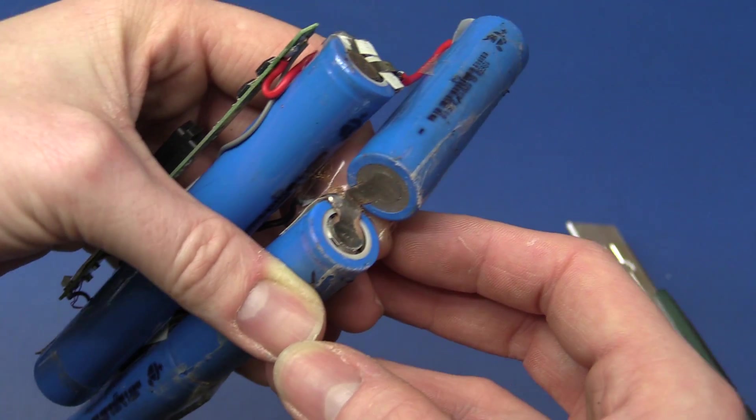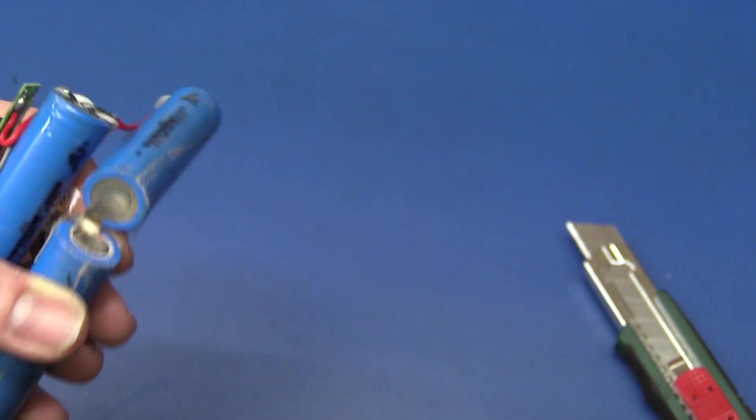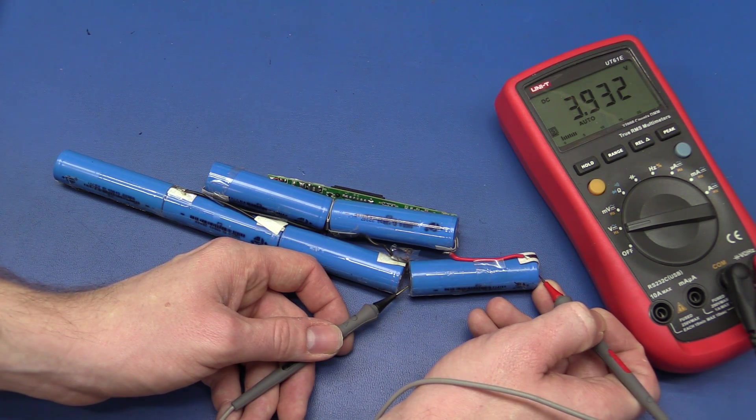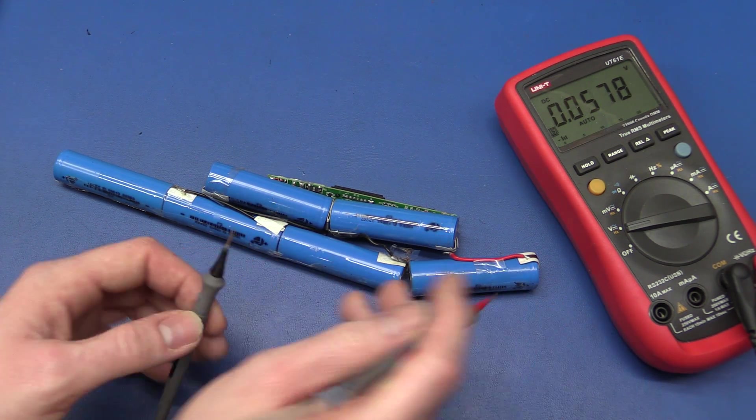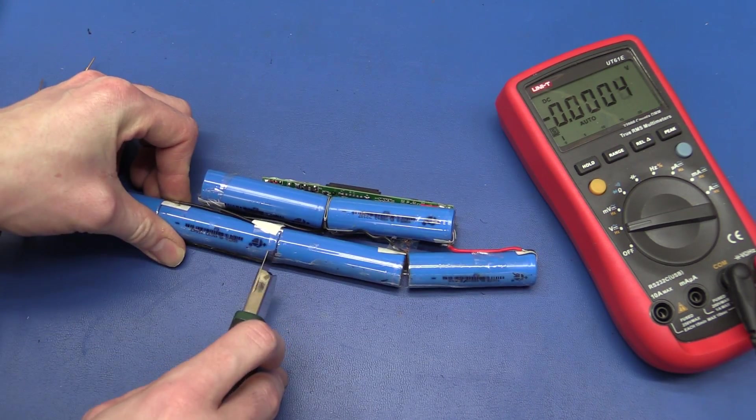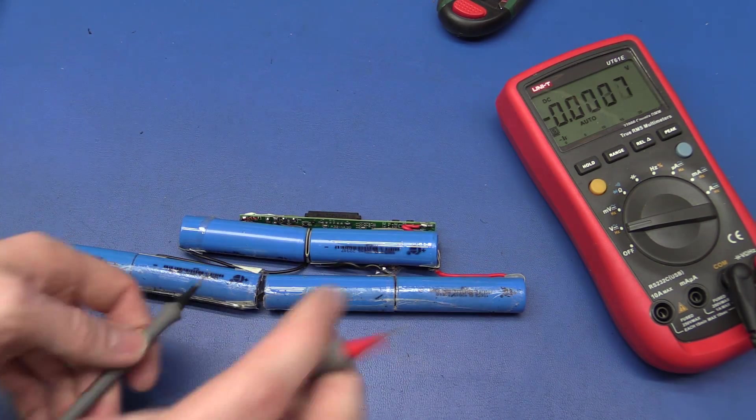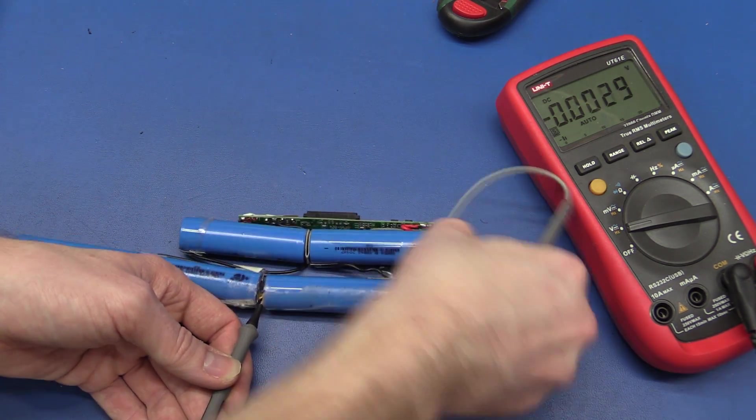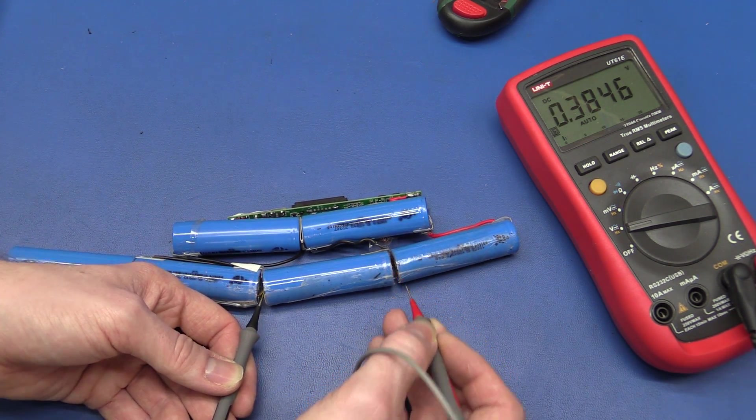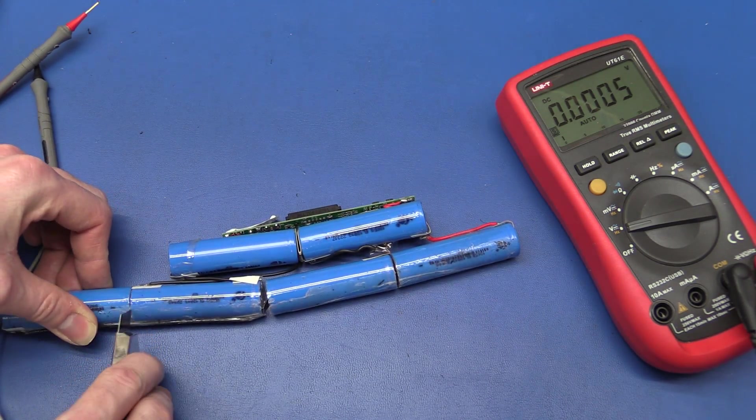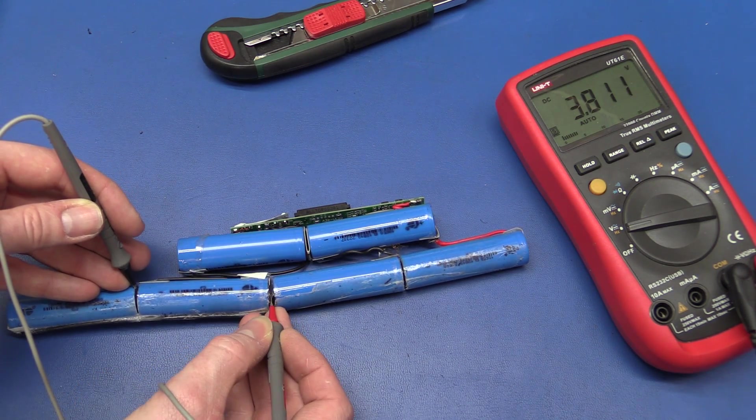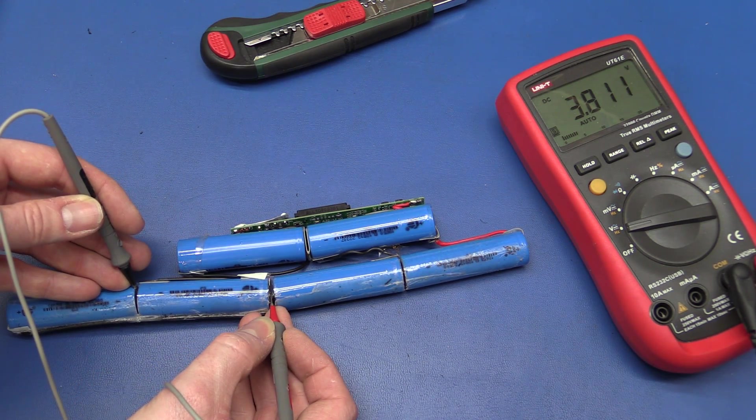Let's try and measure the batteries and see what the voltages are. So this is 3.9 volts, that should be good enough. 3.8 volts also, 3.8 volts also, 3.8 volts also.